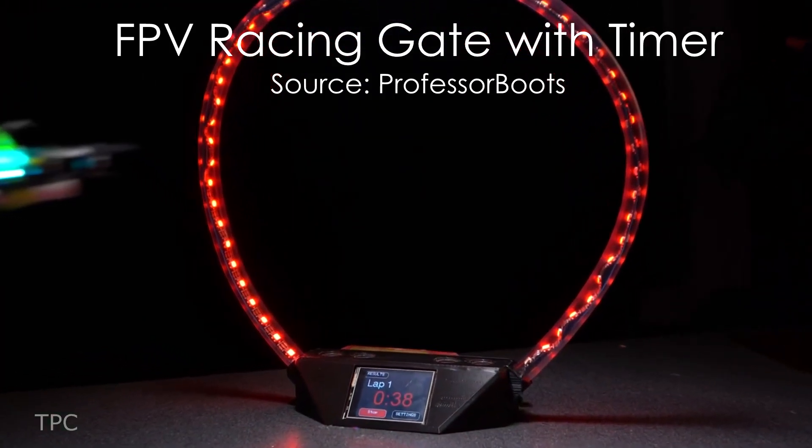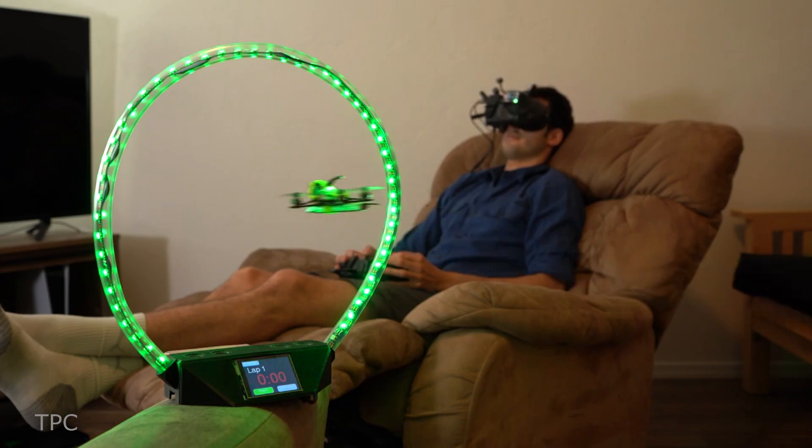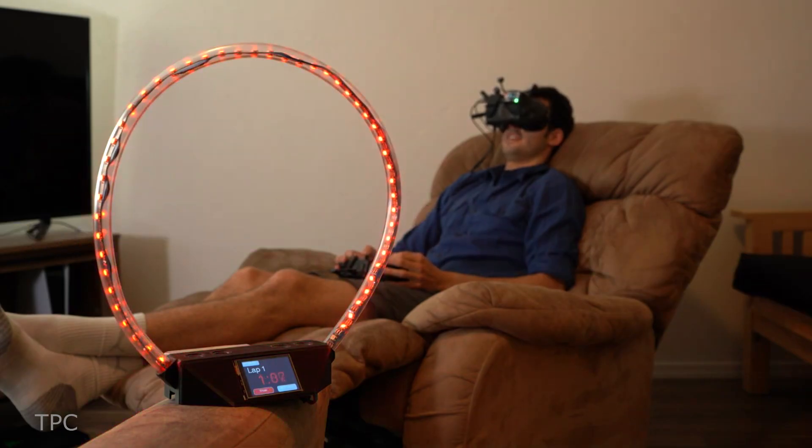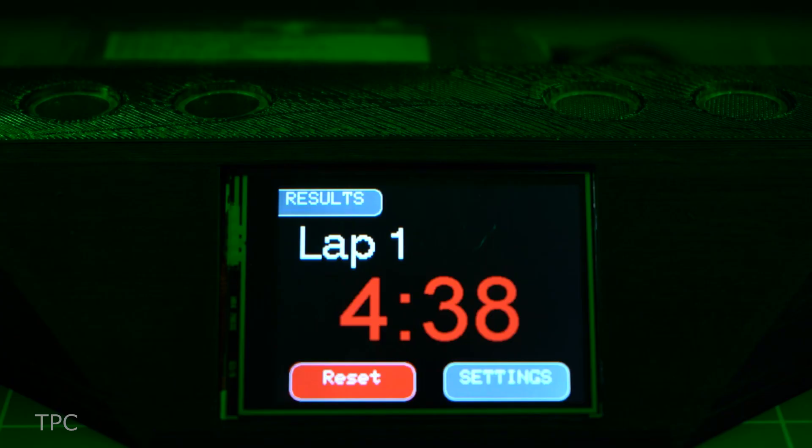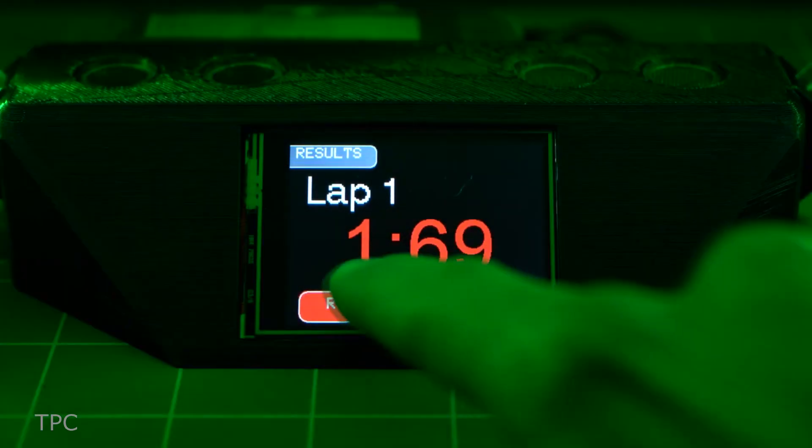Number 8. Next, we have a drone racing gate created by Professor Boots. As a drone passes through, the LED color changes and the lap time is recorded. These details are displayed on a tiny TFT screen, which is installed at a 45-degree angle for easy viewing from almost any angle.